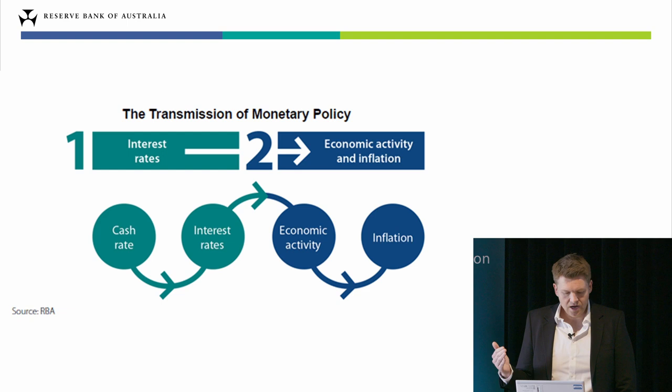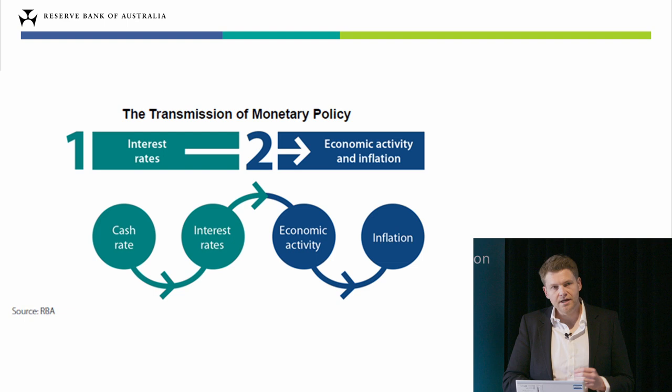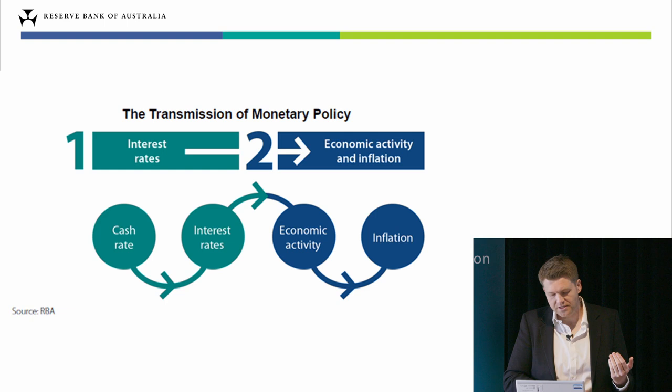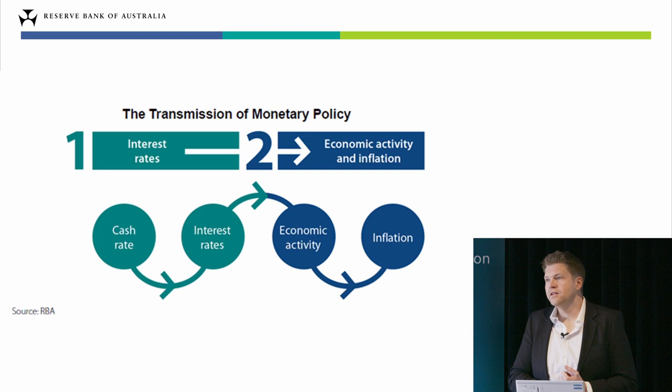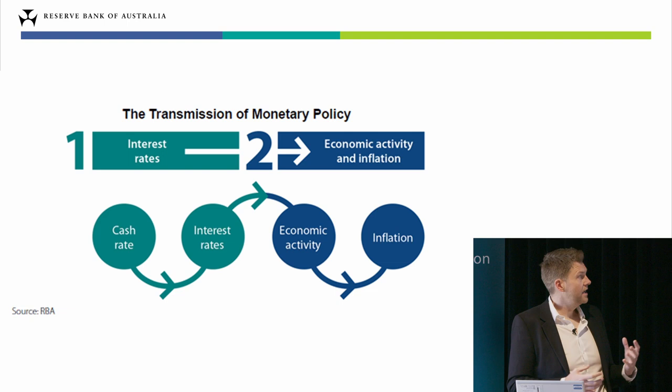When we raise the cash rate, the first thing that happens is it pushes up other interest rates that households and businesses face — that's the first step of the transmission mechanism. The next step is to think about how that change in interest rates goes on to affect their decisions around how much they spend, save, and invest. In the face of high interest rates, households will generally spend less and save more, and businesses will invest less, resulting in less aggregate demand in the economy.